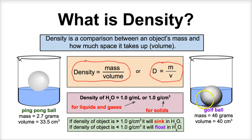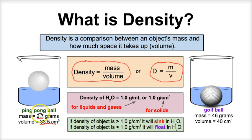So let's take a look at that. The mass of a ping pong ball is about 2.7 grams, and its volume — the amount of space it takes up — is about 33.5 cubic centimeters. So if we do the math, if we take the mass of 2.7 over 33.5, because the numerator is less than the denominator, we're going to have a value that is less than one.